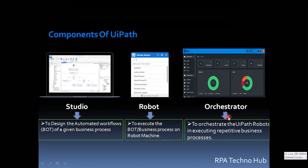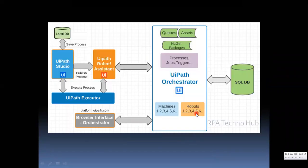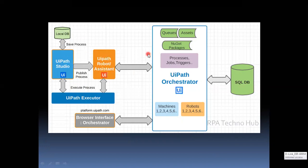Orchestrator is a server application to orchestrate or control the UiPath robots in executing repetitive business processes. This is a simple architecture of UiPath wherein you can see the client-side components and server-side components. On the client side you see UiPath Studio, UiPath Robot, UiPath Executor, Browser Interface, and local DB. When bot development is done, the bot will be stored in local DB, and when you want to run it from Studio, the UiPath Executor component will be invoked to execute the business process. If you have your UiPath Robot connected to Orchestrator, you can publish the process from UiPath Studio to Orchestrator as a NuGet package, which will be stored in SQL DB.